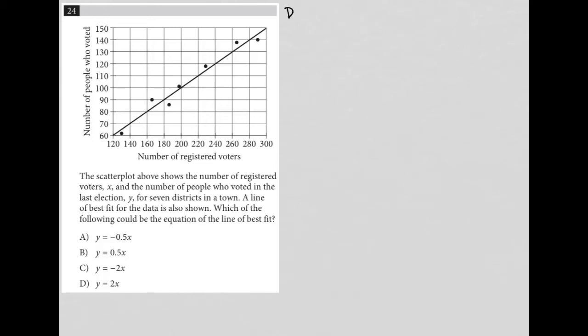This question is a diagram question, more specifically a graph question. With graphs, I take a look at the points on the graph. It looks like we have a line of best fit that goes through there, and our points are below and above that line at various points.